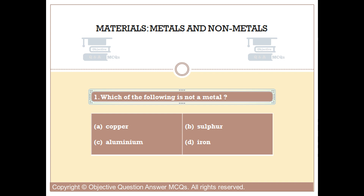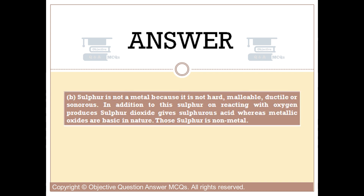The right answer is option B. Sulfur is not a metal because it is not hard, malleable, ductile, or sonorous. In addition, sulfur on reacting with oxygen produces sulfur dioxide, giving sulfurous acid, whereas metallic oxides are basic in nature.